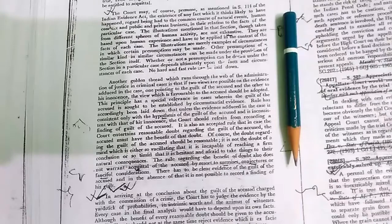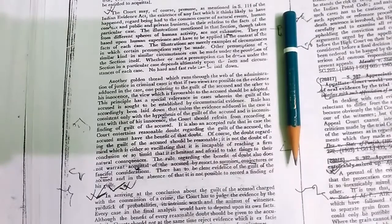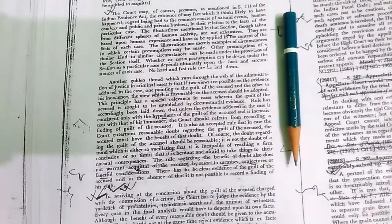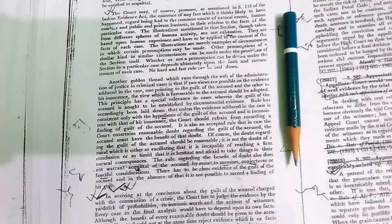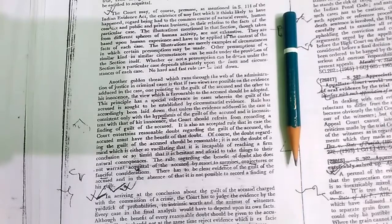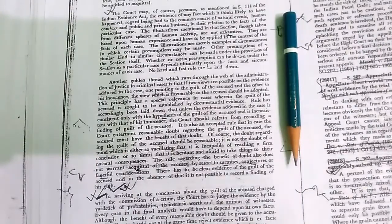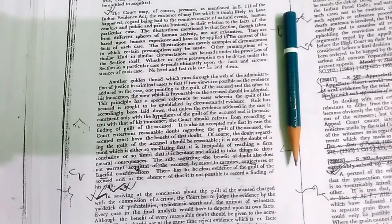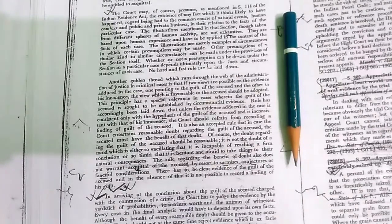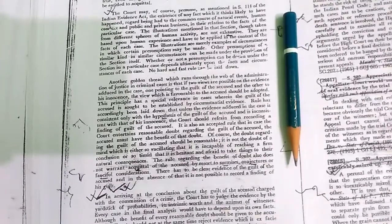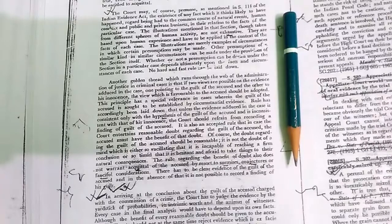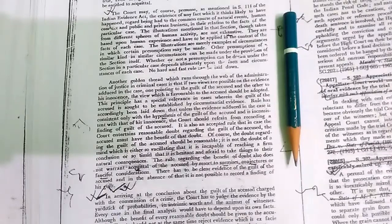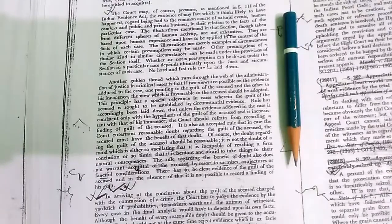Although the benefit of every reasonable doubt should be given to the accused, the courts should not at the same time reject evidence which is ex facie trustworthy on grounds which are fanciful or in the nature of conjectures. The guilt of the accused has to be adjudged not by the fact that a vast number of people believe him to be guilty, but whether his guilt has been established by the evidence brought on record.